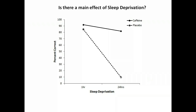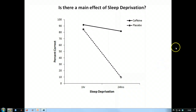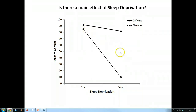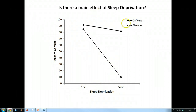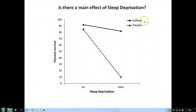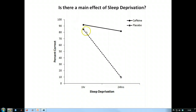The first question to ask is: is there a main effect of sleep deprivation? The best way to think of a main effect is as the effect of the levels of one factor whilst ignoring the levels of the other factor. So we're interested in whether the data for one hour differs from the data for 24 hours, ignoring whether the data came from the caffeine group or the placebo group. We want to work out the average of the caffeine and placebo scores at one hour of sleep deprivation.